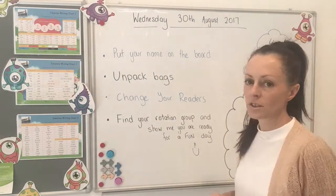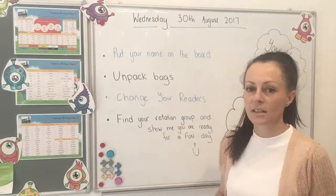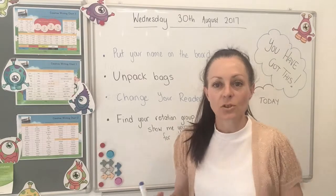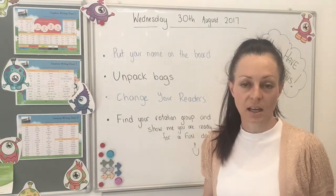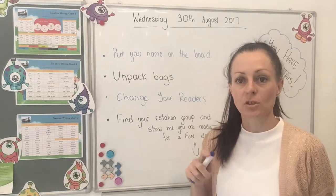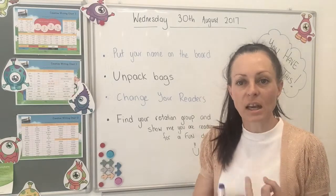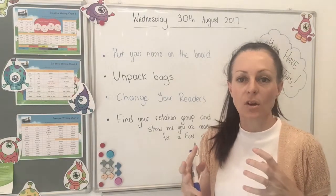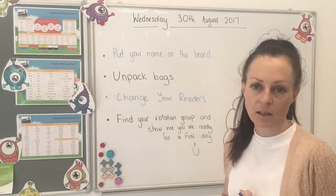Here we've got 'find your rotation group and sit down and show me you're ready' — it says 'show me you're ready for a fun day.' This gives them the opportunity to select the correct behaviour so I know they're ready. You'll definitely need to set the expectations and have a chat with them in a whole class situation — how will I know you're ready? Eye contact, body language, will you be loud or quiet? You need to have conversations with your students before you just go and give them your expectations.